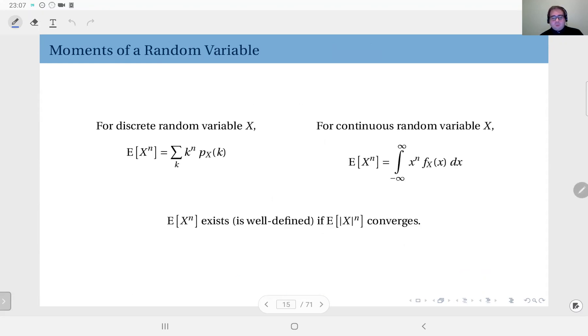For the discrete case, we have k to the power n weighted by the corresponding probability, and we have the sum, and this we call the nth moment.